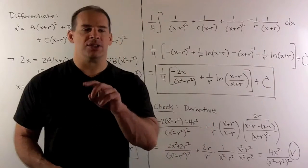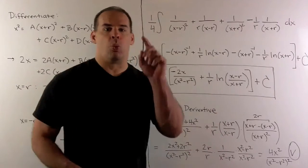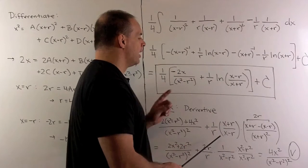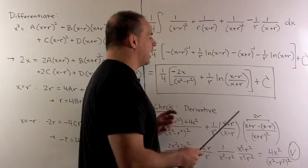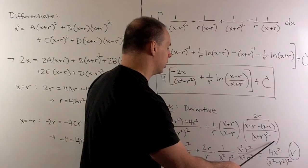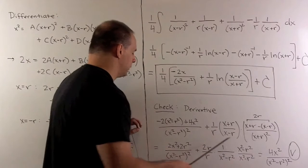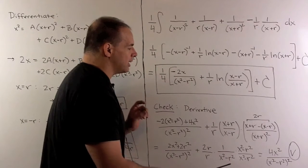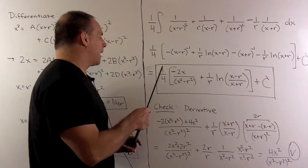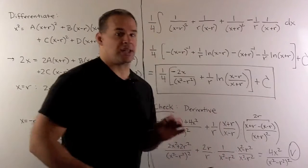The derivative of natural log says, if I put a box here, derivative of natural log of box is 1 over box. So we're just going to flip this over. Then for the derivative of the inside, again we're going to use the quotient rule. So we get this expression here. Now when we start collapsing things, you can just work that out, and you see that we get 4x squared over x squared minus r squared, quantity squared. We put back in our 1 fourth. So our antiderivative here checks out.